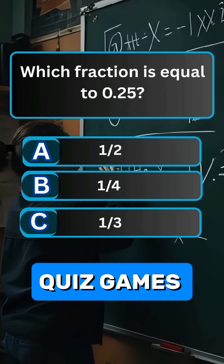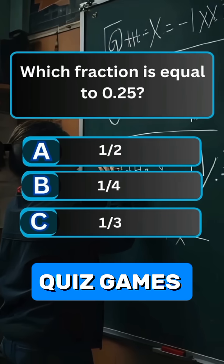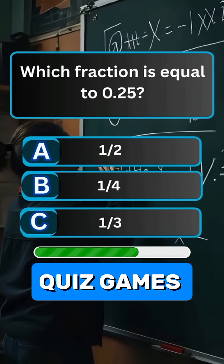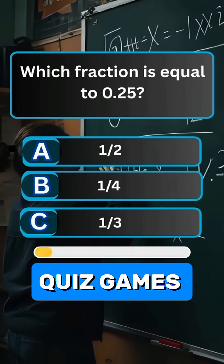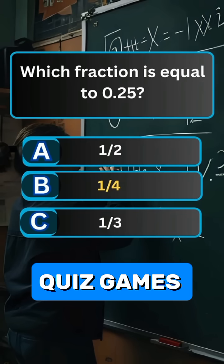Question 7. Which fraction is equal to 0.25? Answer B. One quarter.